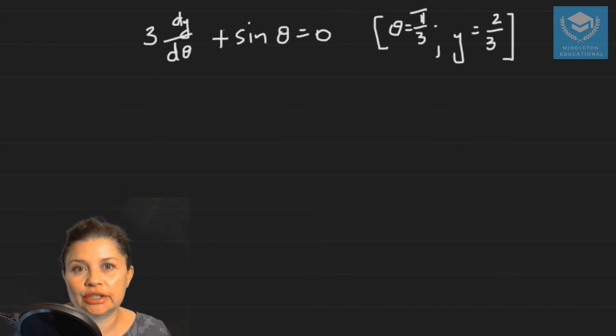So here we have our first order differential equation. The dependent variable is y and the independent variable is theta. Now the way that you know you need to use direct integration here is if you were to cover the derivative, say with your hand, when you're writing it on a piece of paper and you look at the rest of the equation, you ask yourself which are the variables that are in the rest of the equation.